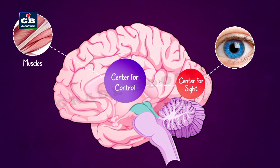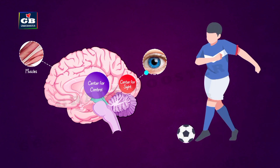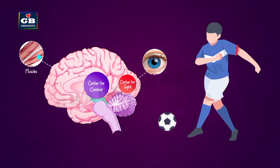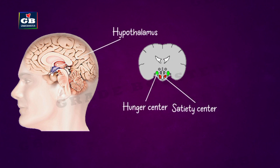For example, if we are playing football, our eyes send information about the position of the ball to an area of the forebrain which analyzes it. After analysis, a decision is taken and the information is sent to the area of the brain which executes it, causing the necessary movements in our muscles to kick the ball in the right direction with the right force.